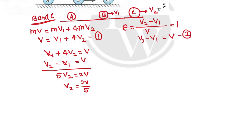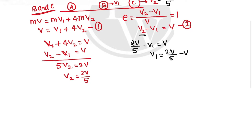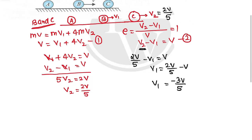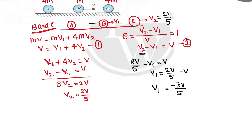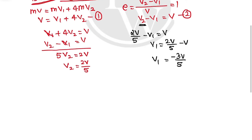Substituting V2 = 2V/5 into V2 minus V1 = V gives V1 = 2V/5 minus V = minus 3V/5. The negative sign means the direction we predicted is reversed, i.e., B bounces back in the opposite direction with magnitude 3V/5. So after the first collision, C moves right at 2V/5 and B goes back left at 3V/5.